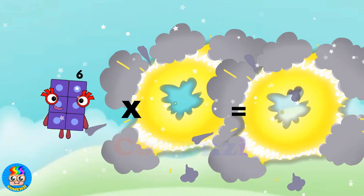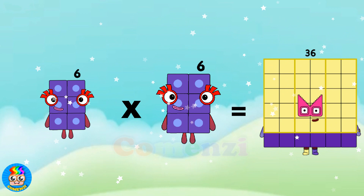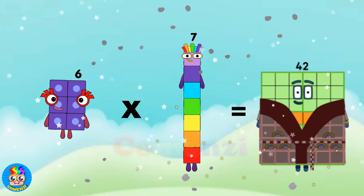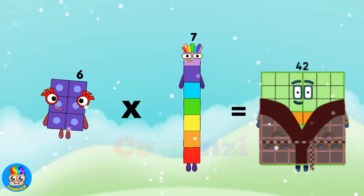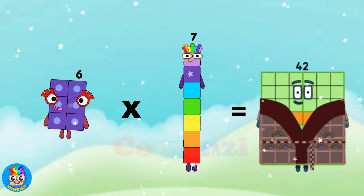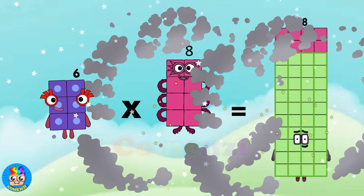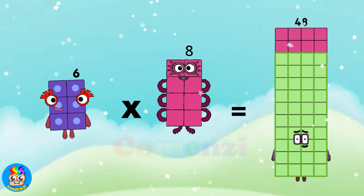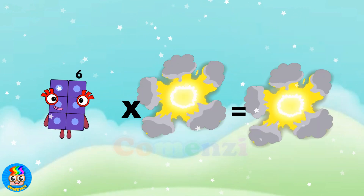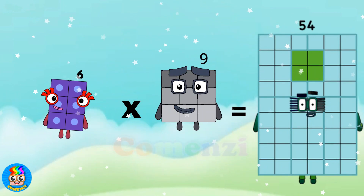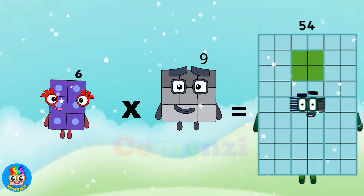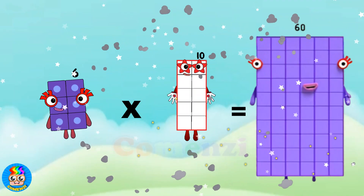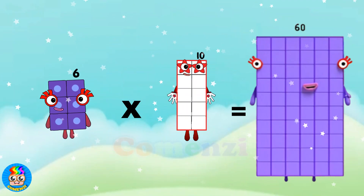Six times six is thirty-six. Six times seven is forty-two. Six times eight is forty-eight. Six times nine is fifty-four. Six times ten is sixty.